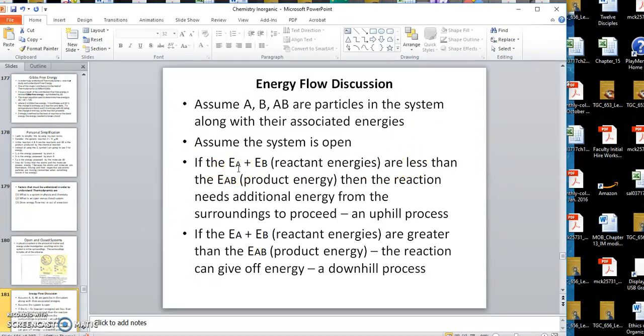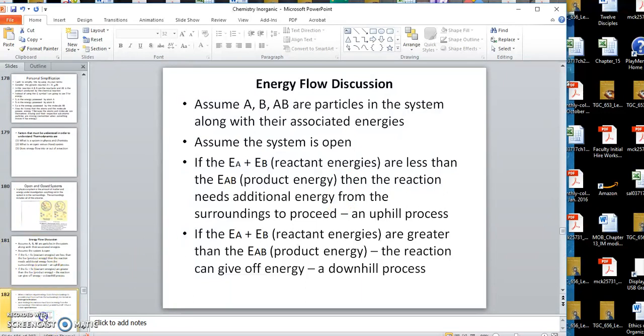If the E_A, now this system is open, which means it's open to the outside, and basically what that means is that energy could flow in or flow out. Whatever happens to the reactants and the product, energy could either flow out of that system or come into the system. Assume that the E_A, the energy possessed by atom A, plus the E_B, the energy possessed by B, which are the reactants, are less than the product energy. That energy, then, in that case, for the reaction to go, you would need additional energy.